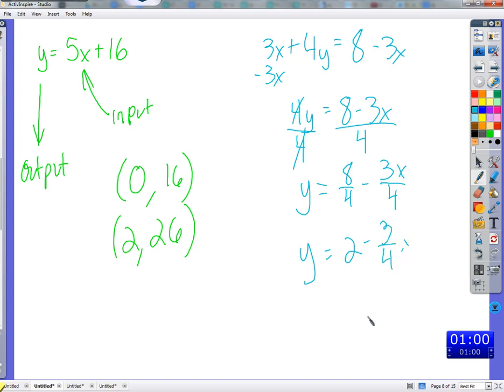If we put them together, we're going to combine the numerators with this operation here, subtraction, 8 minus 3x, all over four. And we can simplify eight over four as two. All right, it's three-fourths x. If we want to write it as mx plus b, we could write it this way.